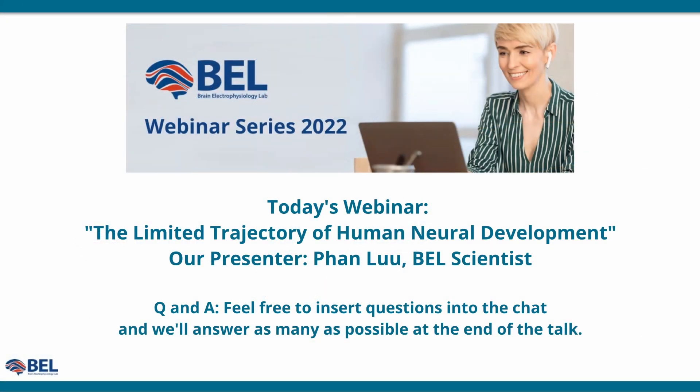Good morning and welcome to the VAL webinar. I'm Corin Tucker, the marketing director, and I'll be the moderator today. I'm going to ask that you hold questions until the end of our talk, and then we'll have time for a Q&A. I want to introduce our VAL scientist, Fawn Liu. He's the author of the paper we're discussing today: 'The Limited Trajectory of Human Neural Development.'